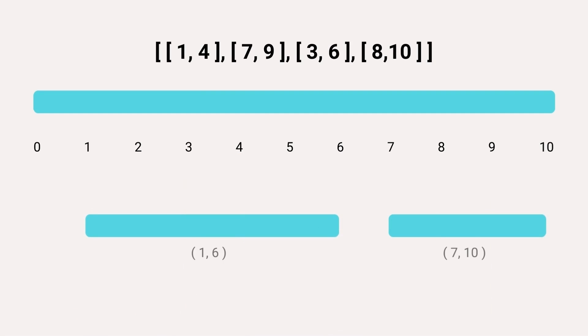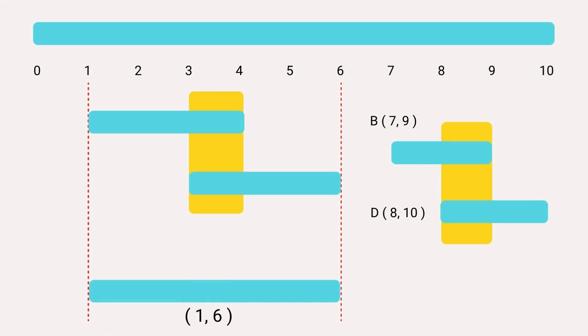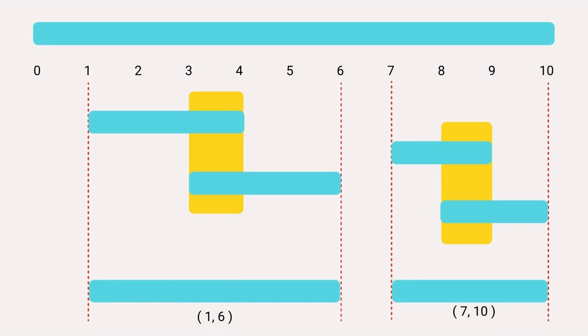Our goal in this problem is to merge these overlapping intervals. The merged interval for A and C is a new interval that starts at 1 and ends at 6. Likewise, the merged interval for B and D is the interval starting from 7 and ending at 10.